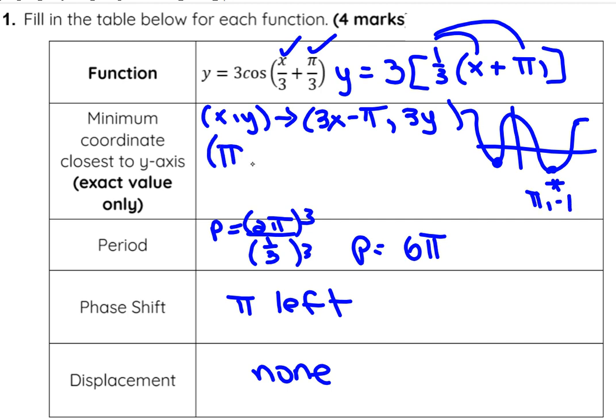I'm going to run that through the mapping notation. 3 times π is 3π, take away π is 2π. And then 3 times y, where y is negative 1, gives negative 3. So that new minimum point closest to the y-axis would be (2π, -3).